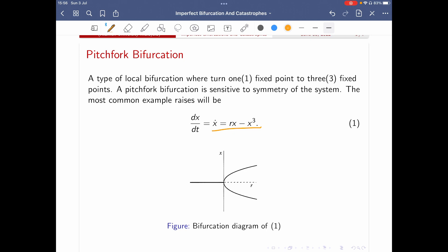It's a type of local bifurcation where it turns one fixed point to three fixed points, or maybe turns three to one, just depends on the perspective. And the most common example would be x dot equal to rx minus x cubed.